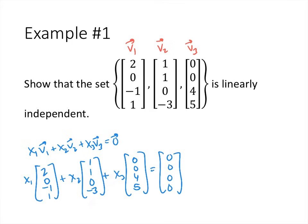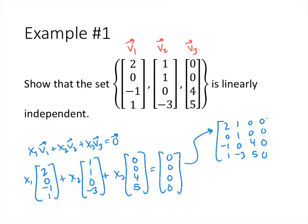We can solve this vector equation by setting up an augmented matrix. The augmented matrix looks like: rows (2, 0, -1, 1), (1, 1, 0, -3), (0, 0, 4, 5), with a column of zeros on the right. Now let's work to row reduce that.